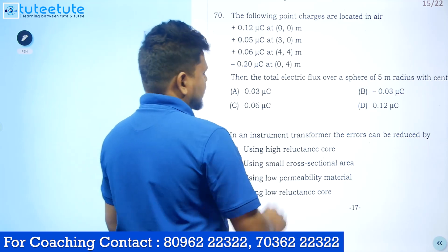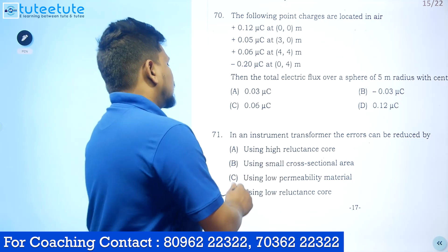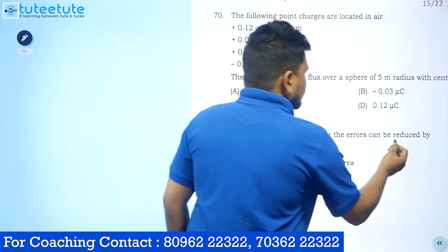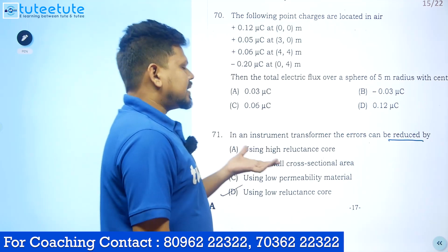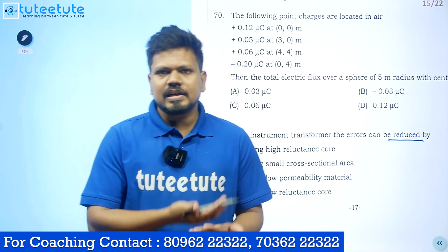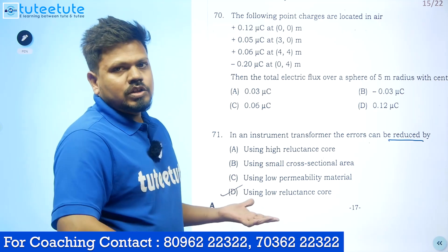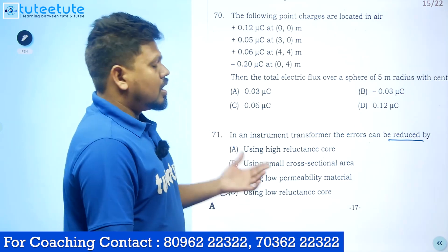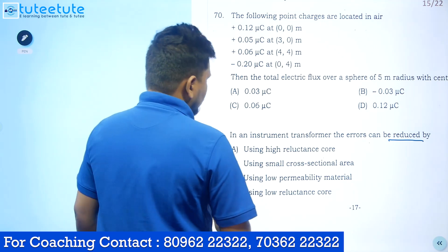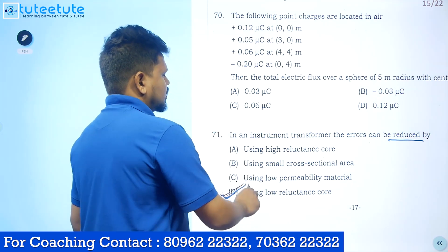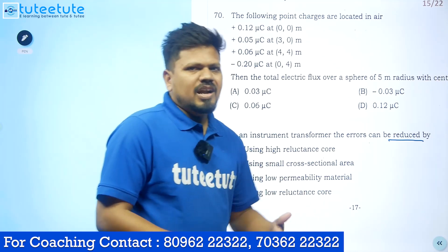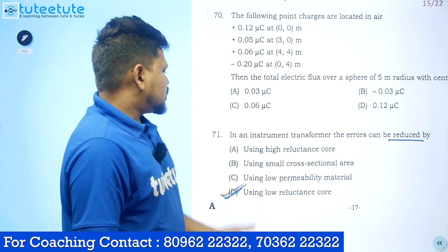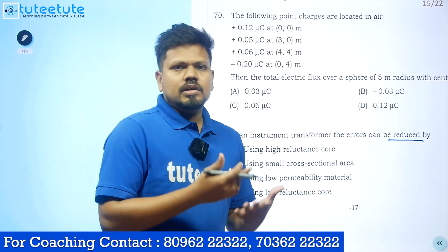The options given are: using high reluctance core, using small cross-sectional area, using low permeability material, or using low reluctance core. To reduce the errors, the reluctance of the core must be decreased. Whenever you decrease the reluctance, the error percentages in the current transformer or potential transformer will decrease. So the answer is: using low reluctance core. Using any other method will not decrease the errors.